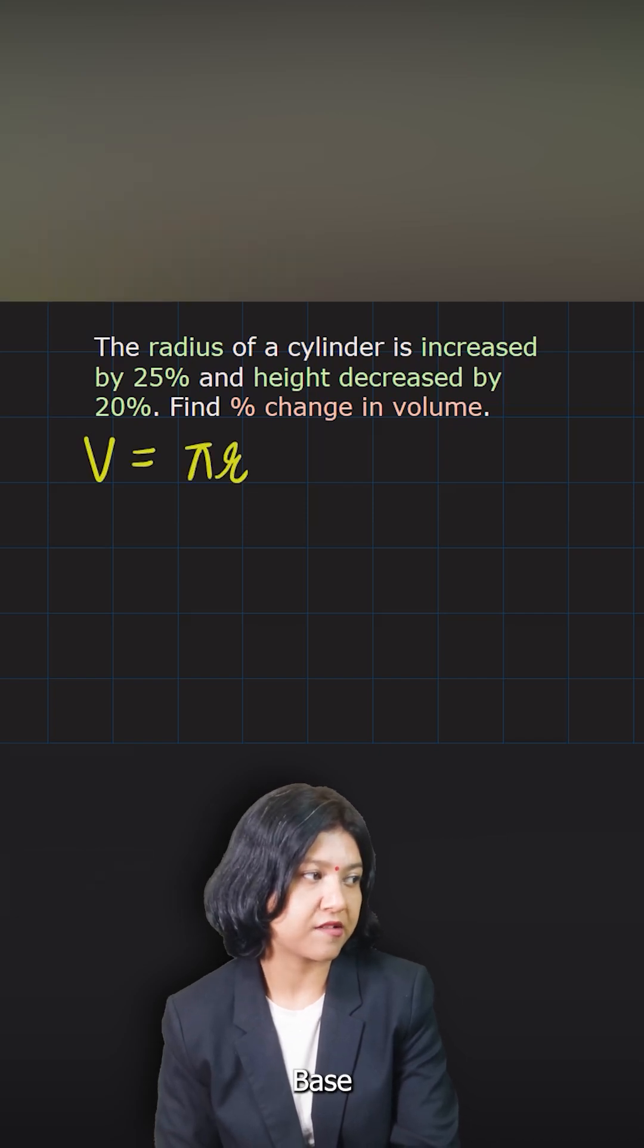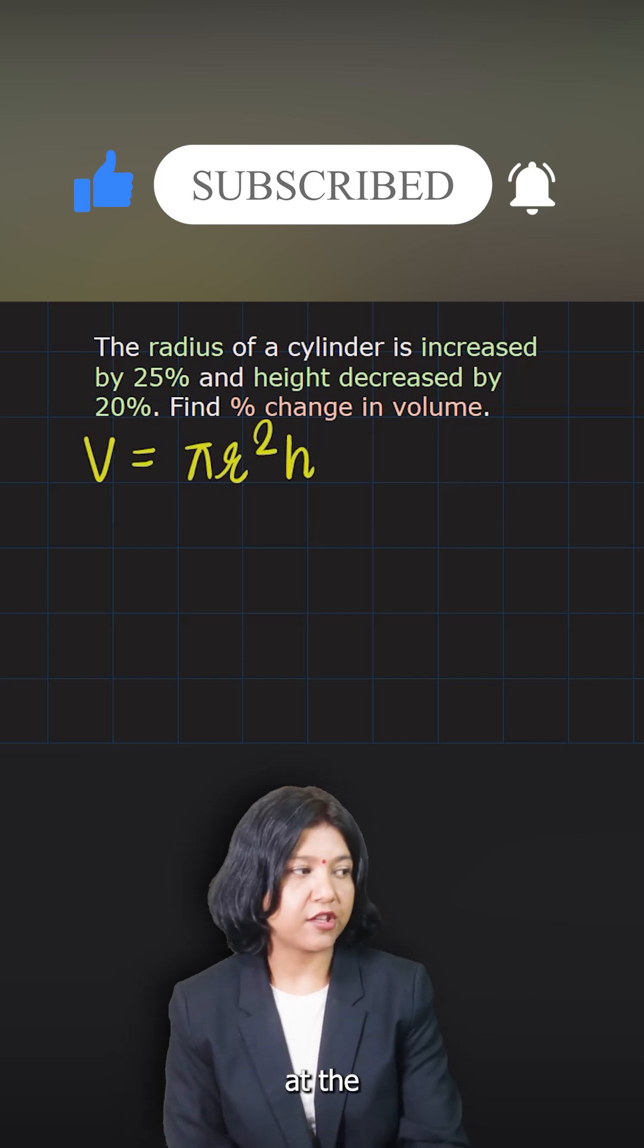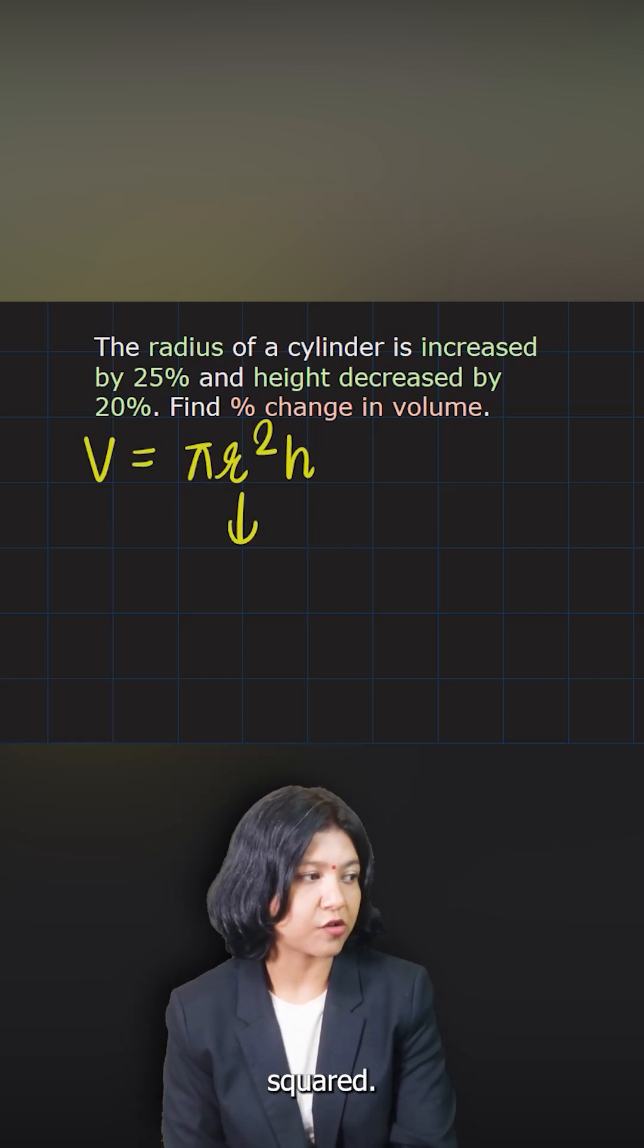Area of the base times height. Base is a circle, so pi r squared and times it by height. If you look at the formula, it's the radius that's getting squared.